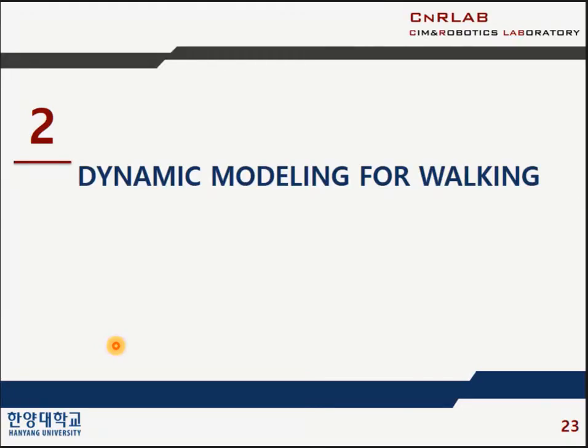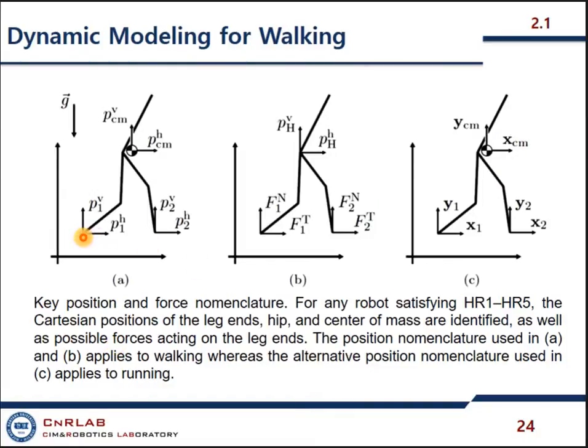Let's go for dynamic modeling for walking. Let me put first some notational symbols we are going to use in our study. This is the position of the leg in this simple step. One leg is behind and one leg is in front. The behind leg is denoted by P1 vertical component and horizontal component. Gravity is downward. The front leg is denoted by P2 vertical and horizontal components. The center of mass is PCM, vertical and horizontal component. There's tangential force, normal force again, horizontal and vertical components. And X1, Y1, X2, Y2, these are the things.